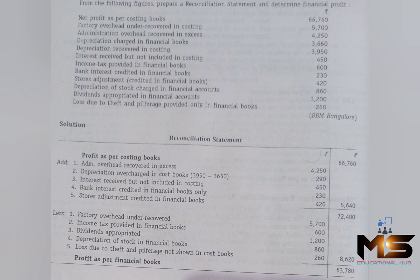The first item to add is Administration Overhead Recorded in Excess. Then, Depreciation Overcharged in Cost Books is $3,950, but in Financial Books it is $3,660.